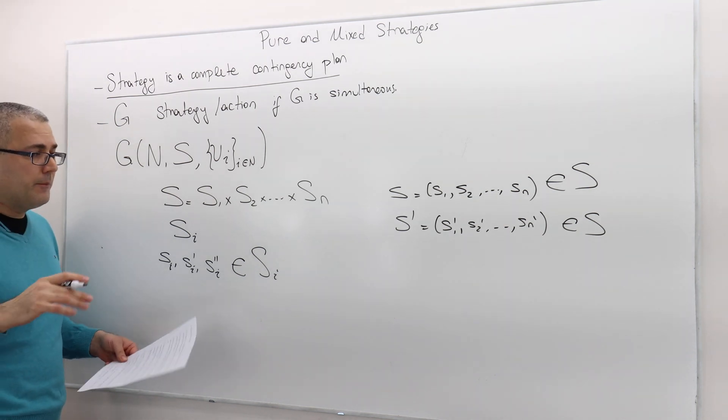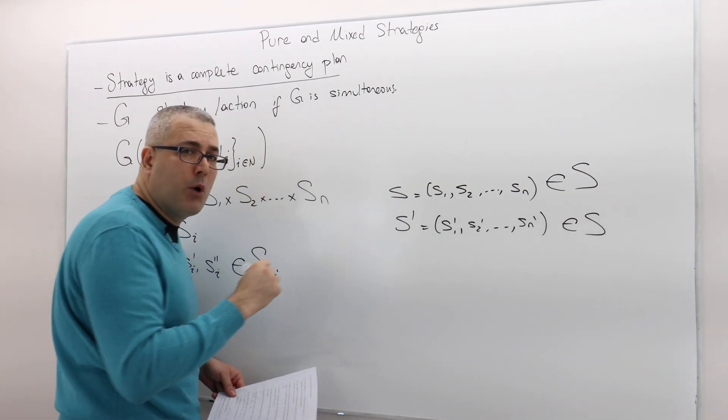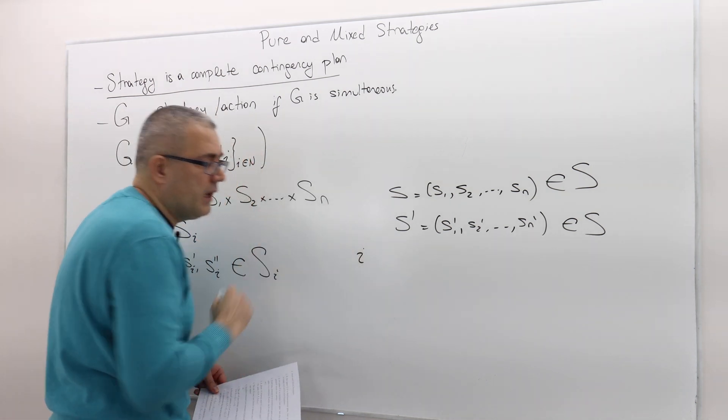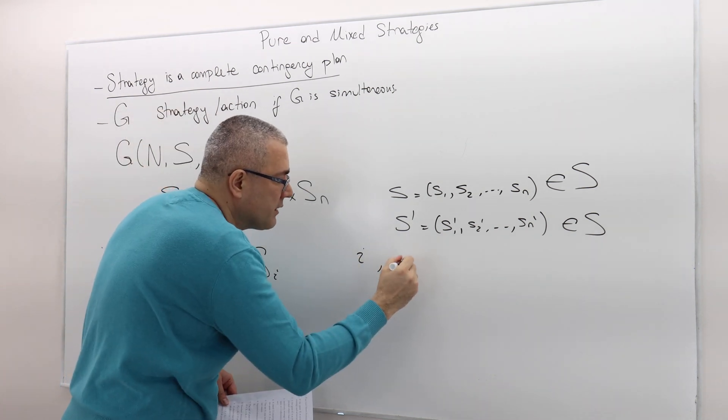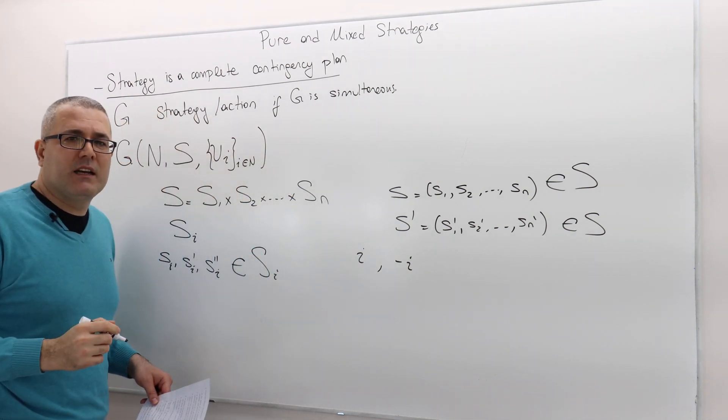Whenever you want to say player I and his opponents. So player I, this is how we denote him or her. And his opponents are denoted by minus I.